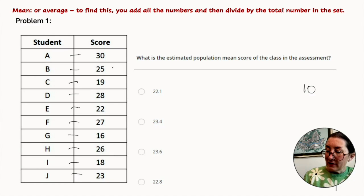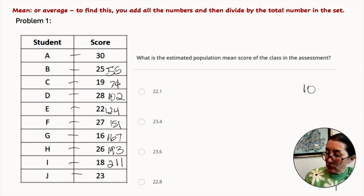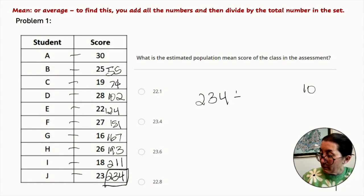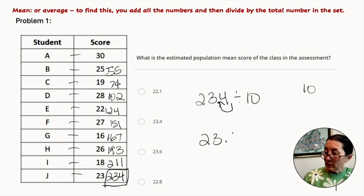30 plus 25 is 55. Plus 19 is 74. Plus 28 is 102. 22, 124. 27, 151. 16, 167. 26, 193. 18, 211. And 23 is 234. So that is our total, 234. Then we divide it by the total in the set, which is 10, which means we just moved the decimal point. So the answer is 23.4.